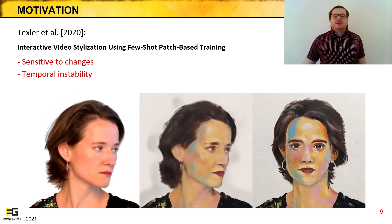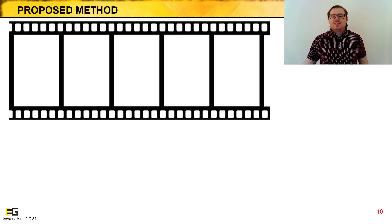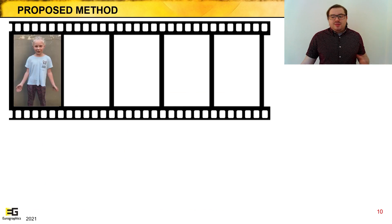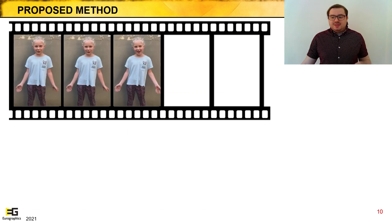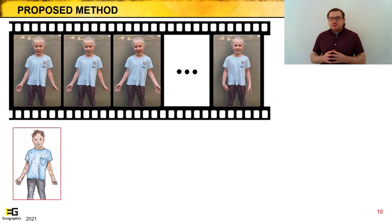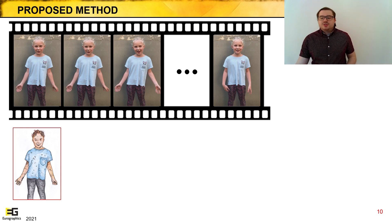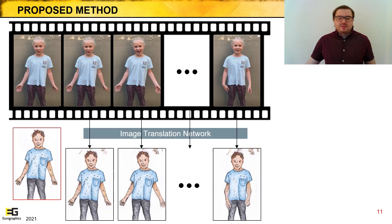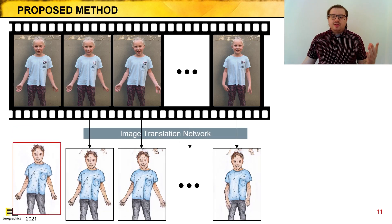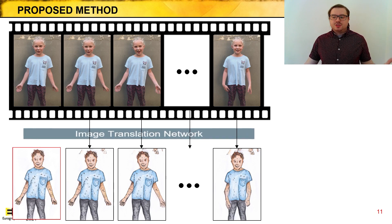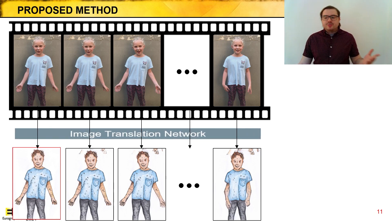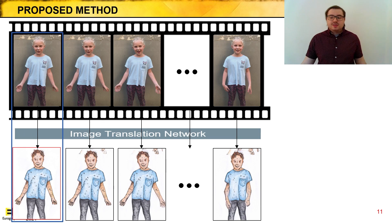To address the issues of previous methods, we propose our new method. We have our video sequence consisting of individual frames — in this case a gesturing child. We ask an artist to paint a stylized version of the first frame, creating our paired keyframe. Like Texler et al., we train an image translation network to synthesize the rest of the sequence, minimizing the L1 loss per-pixel function on the original keyframe to ensure that the style on the artist-prepared frame is preserved as closely as possible.